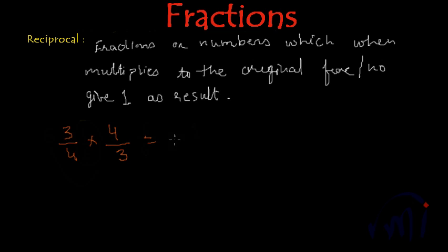So when you multiply these two, you will get 4 times 3 is 12 divided by 3 times 4 is 12, which is 1 whole.